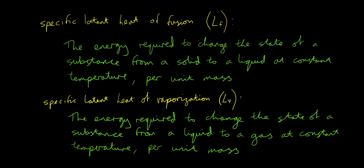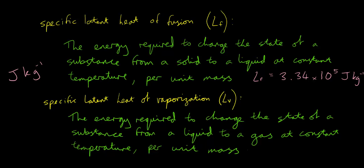The units of both forms of specific latent heat are joules per kilogram. For water, the specific latent heat of fusion is 3.34 × 10⁵ J/kg, whereas the specific latent heat of vaporization for water is equal to 2.27 × 10⁶ J/kg.